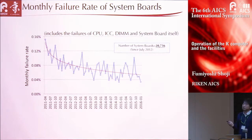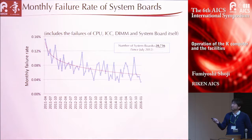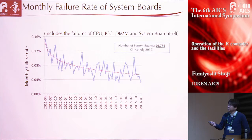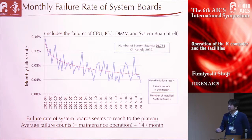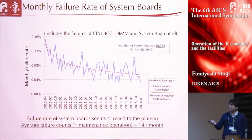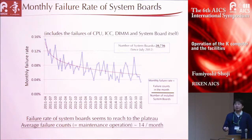The last component is the system board. As I said, system board failures include failures of CPU, ICC, DIMM, and the system board itself. This corresponds to the frequency of maintenance operations. The failure rate of the system board seems to have reached a plateau. Average failure counts, which correspond to the frequency of maintenance operations, were about 14 times per month—in other words, maintenance operations are done on average every two days.